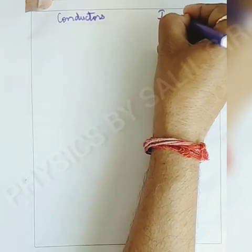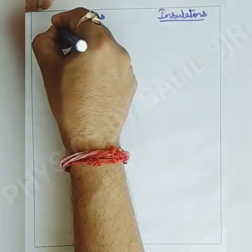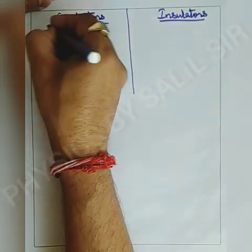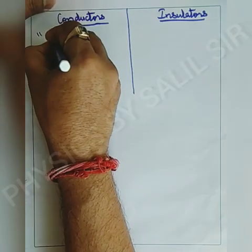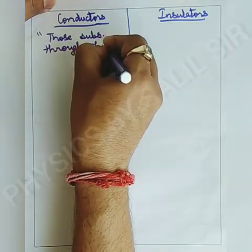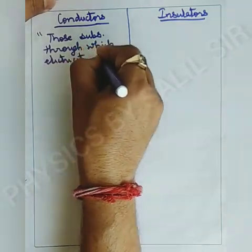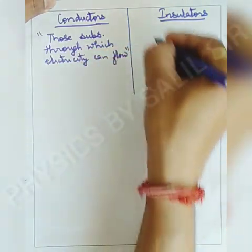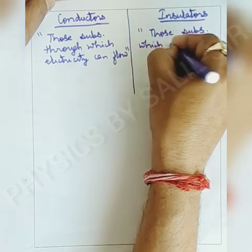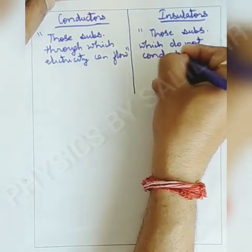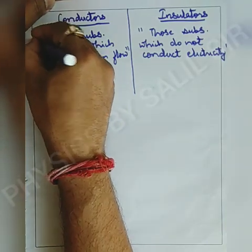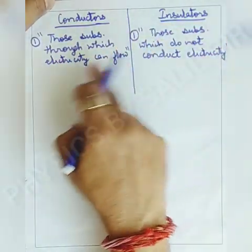Now let's talk about conductors and insulators. Conductors are those substances through which electricity can flow. Insulators are those substances which do not conduct electricity. This is the difference based on definition and property.